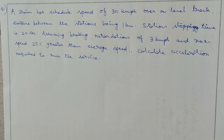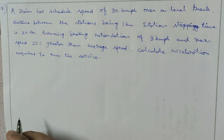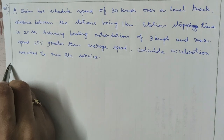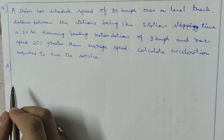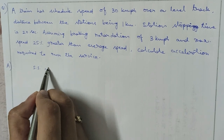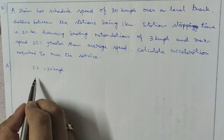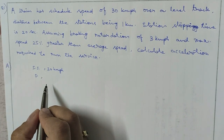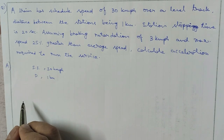This is a problem on speed-time curve. A train has a schedule speed of 30 kmph over a level track and the distance between stations is 1 km.